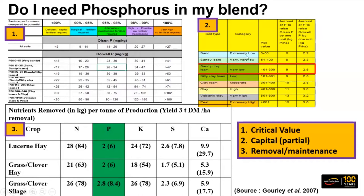The second thing to consider is capital — are your phosphorus levels really deficient, meaning you might need to supplement any autumn application with a spring application? To raise your Olsen P or Colwell P value in the soil, you'd need to apply some capital phosphorus. This table shows that for a sandy clay loam with a PBI of 100 to 300, you'd need to apply 9 kilograms of phosphorus — essentially 100 kilograms of single super or superfect — to raise your Olsen P by one. For Colwell P, you'd need 2.5 kilos of phosphorus to lift by one. The third thing is removal — am I returning nutrients through grazing, or cutting for silage or hay? For a three-tonne yield of a grass-clover hay crop, you're removing 6 kilos of phosphorus.